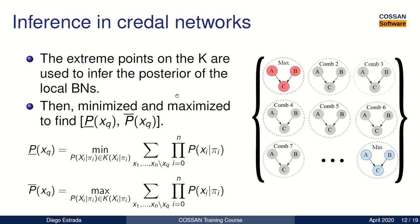Those posteriors are minimized or maximized to find the final bounds of the desired posterior. Looking at this figure, each group of networks corresponds to a combination of extreme points. For a given combination, we substitute the probability values of the extreme points into the joint probability distribution, then marginalize out all variables except the query variable to get a posterior. We repeat this for each combination, and at the end we find which combination gives the minimum and the maximum — those become our lower and upper bounds for the posterior.